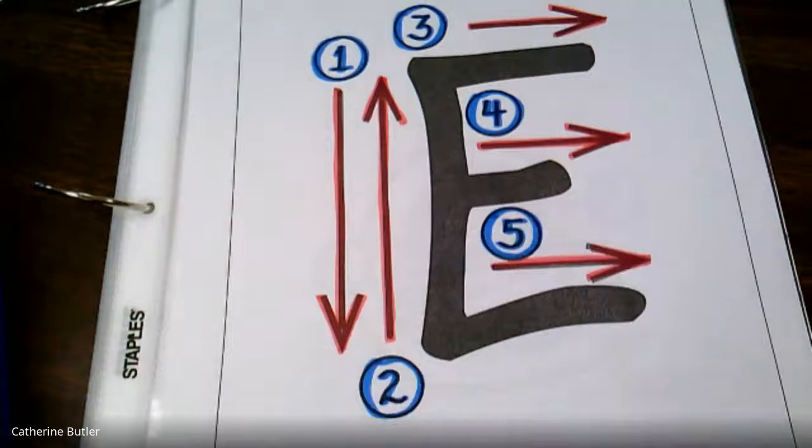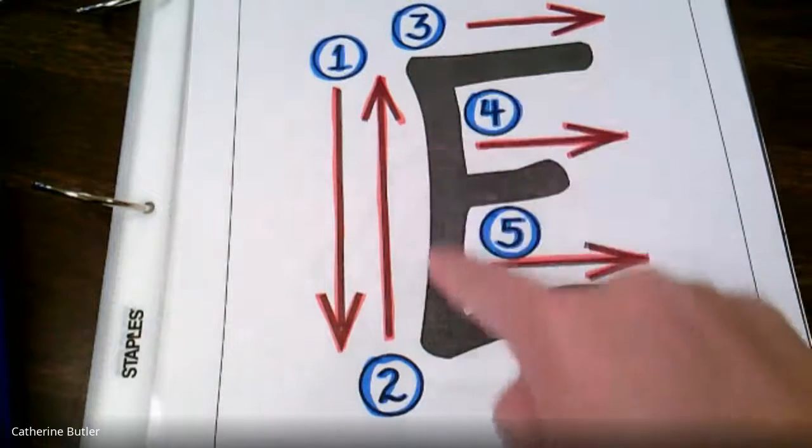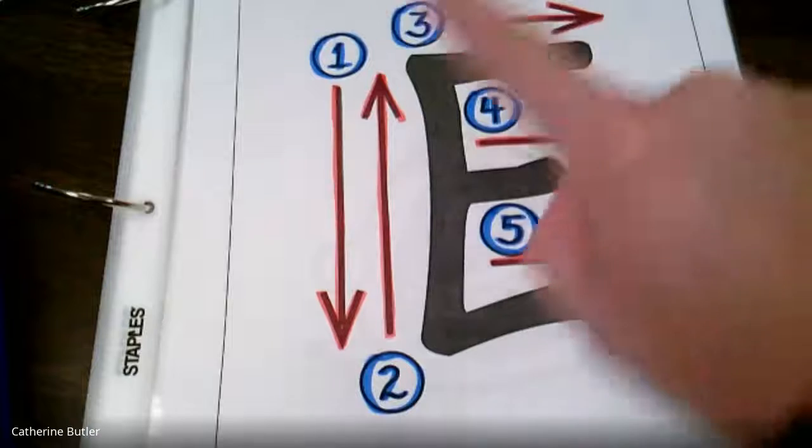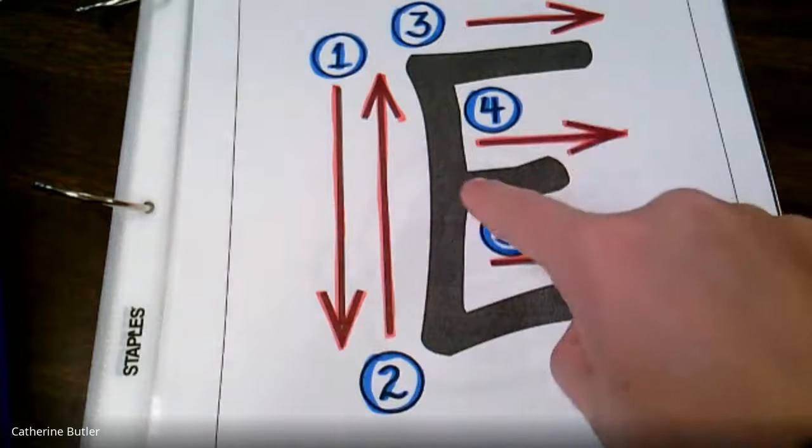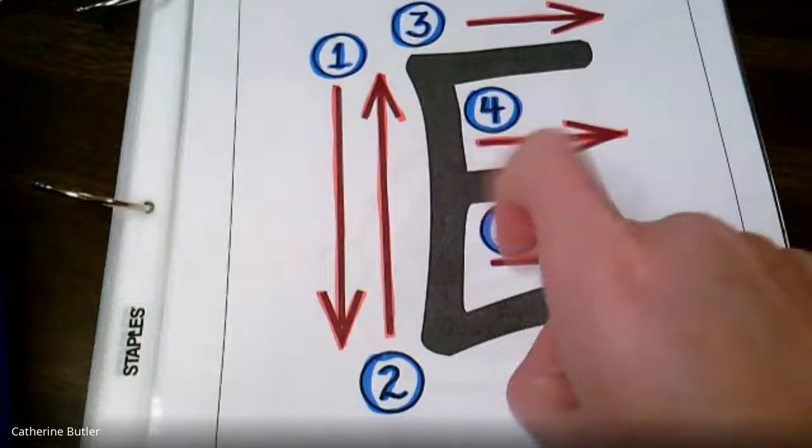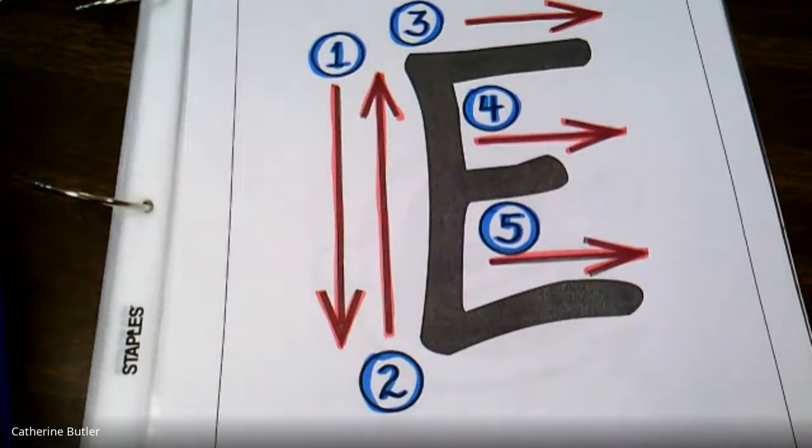Let's do it again. Let's do it, actually, let's do it together. Ready? Put your finger down at the top, make a line down, go back up, make a little line out, pick your finger up, go to the middle of your line, and make a little line out, pick your finger up, and then go all the way down to the end of your line, and make a line out.